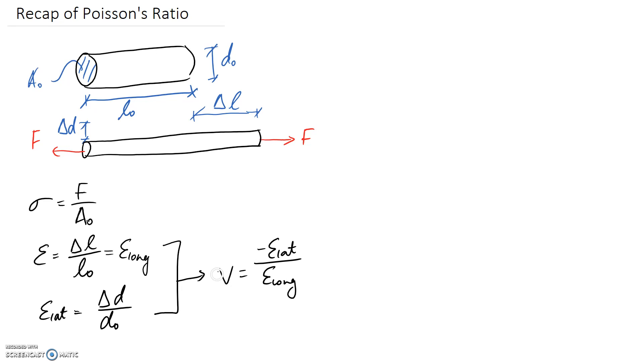So Poisson's ratio is always going to be a positive number, and when you apply a tensile force here, you'd expect the strain to be a positive number because it's extending, but what happens is when you extend it in this direction, you get a smaller diameter, so the strain in the lateral direction becomes negative because it's getting smaller, and that's why there's a negative in this part of the equation, just to correct for that.